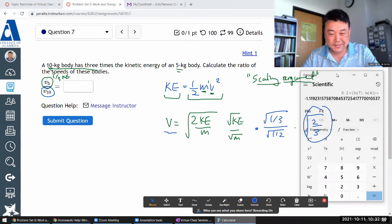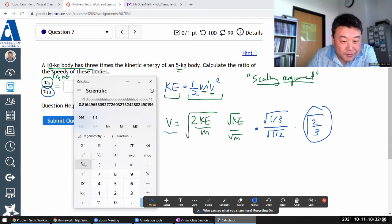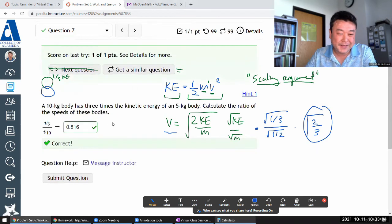And because this is a shortcut, there's a chance that I made a mistake. Okay, we'll see. Okay, two thirds square root of it. 0.816. It looks about right, but let's see. Yeah.